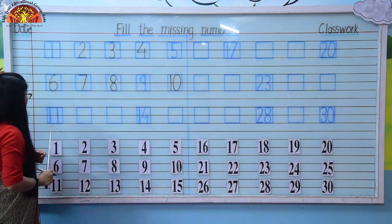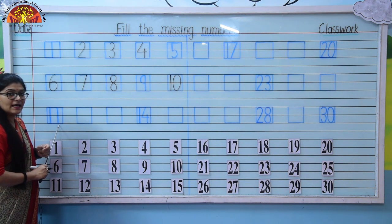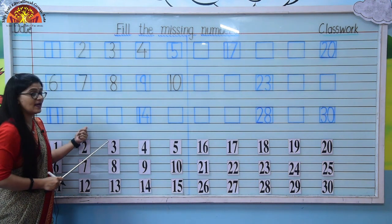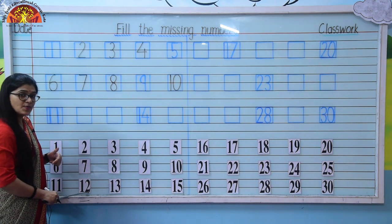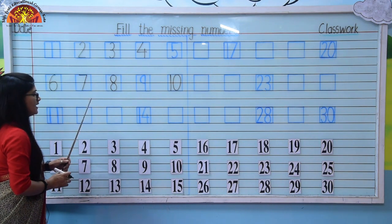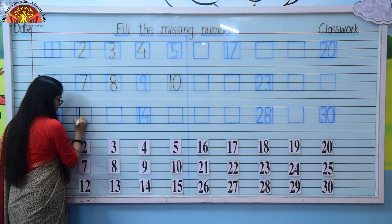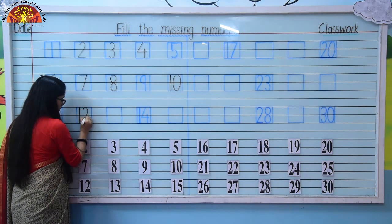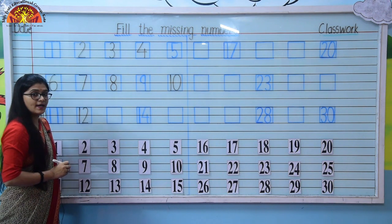Come to next line. Number 11 is already written here. So which number comes after 11? It's 12. So here we will write number 12: 1, 2, 12.